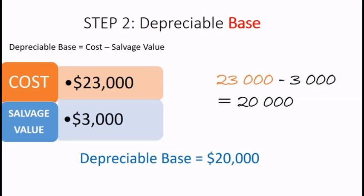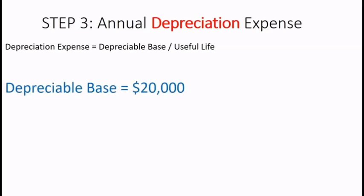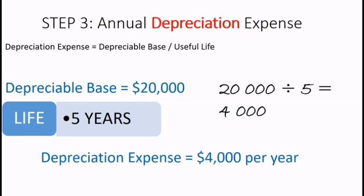Step three is to calculate the annual depreciation expense: the depreciable base divided by the useful life. $20,000 divided by five gives us $4,000 of depreciation expense per year.